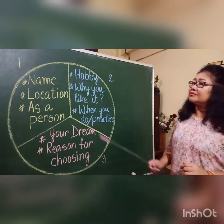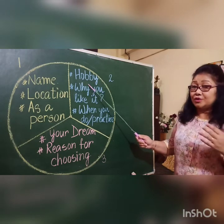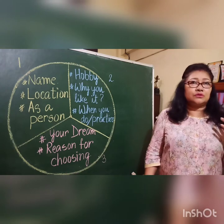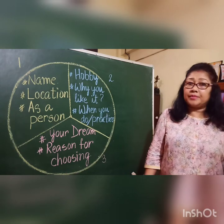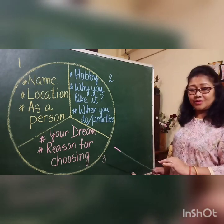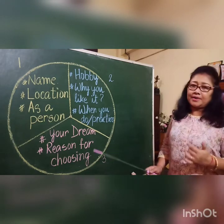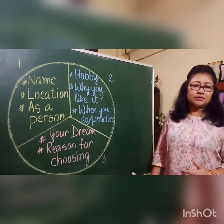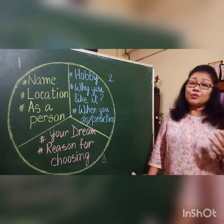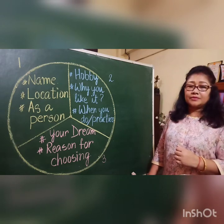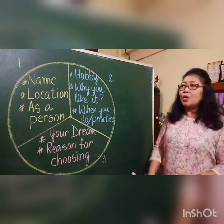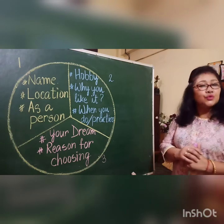The second part is your hobby — what you like to do in your leisure, why you like it, and when you practice it. For example, if you like to play the piano, you should say why you like it and when you do it. The third part is your dream: what would you like to be when you grow up, what profession you would choose, and the reason for choosing it.